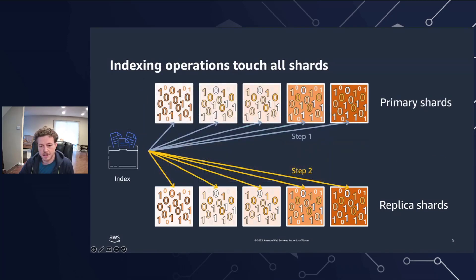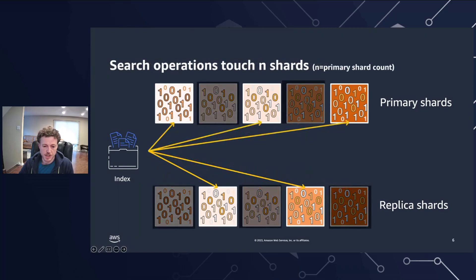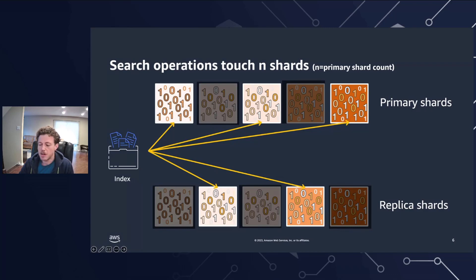When sending data into OpenSearch, indexing requests are sent to all shards that belong to an index. Data is written to the primary shards first and then to the replica shards. For example, for an index with five primary shards and one replica, each indexing request touches 10 shards. When searching data, search requests are routed by the coordinator node to either a primary or replica shard for all shards belonging to the index. Search requests are sent to n shards, where n is the number of primary shards regardless of the replication factor. So for an index with five primary shards and one replica, each search query touches five shards, primary or replica, from that index.